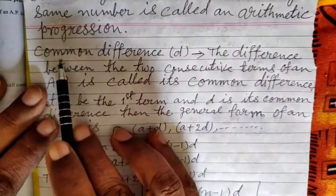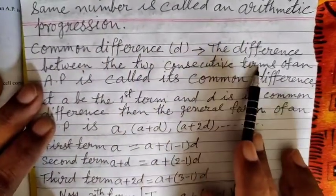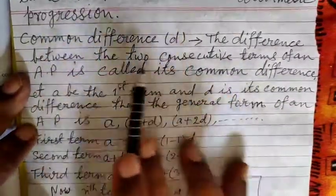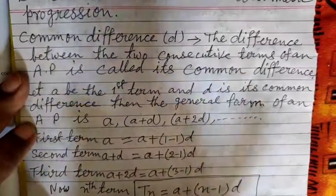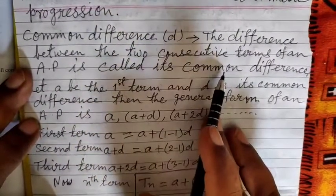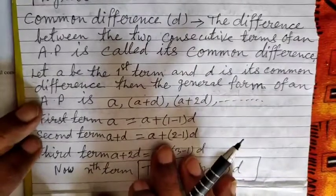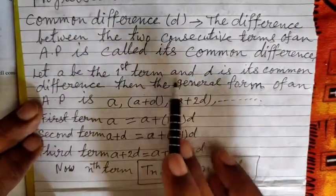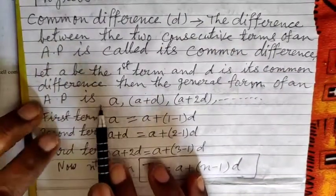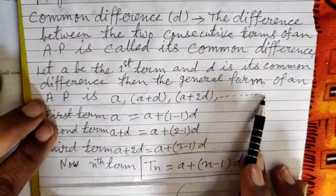Now, what is the common difference? The difference between two consecutive terms of an arithmetic progression is called its common difference, and it is denoted by small 'd'. Let 'a' be the first term and 'd' be its common difference. Then the general form of an arithmetic progression is: a, a+d, a+2d, a+3d, a+4d, and so on.